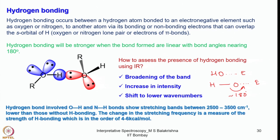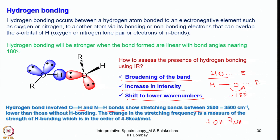How do we assess the presence of hydrogen bonding using IR spectroscopy? First, you will see a broadening of the band associated with the group involved in hydrogen bonding. For example, the OH stretching frequency will become broad, increase in intensity, and shift to lower wavenumbers — it can shift up to 50 or 80 cm⁻¹. Hydrogen-bond-involved OH and NH show stretching bands between 2500 to 3000 cm⁻¹. The change in stretching frequency is a measure of the strength of hydrogen bonding, which is on the order of 4 to 6 kcal/mol.